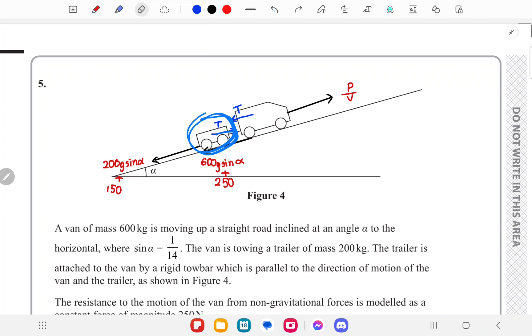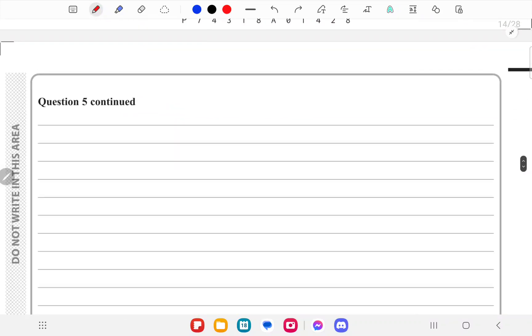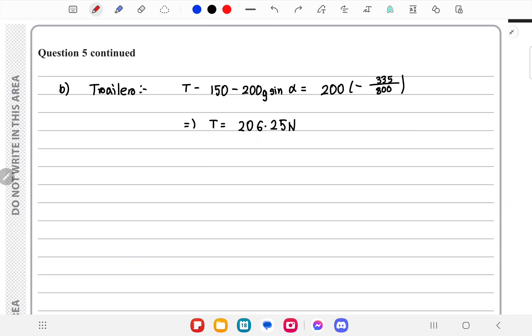The forward force on it is T, and the backward force on it is 200g sine alpha plus 150. You could do it with the van as well, but you'd have power by velocity minus T minus 600g sine alpha minus 250. I'll just do it for the trailer. So T minus 150 minus 200g sine alpha equals 200 times a. The acceleration is minus 335 by 800, so we can calculate T to be 206.25.